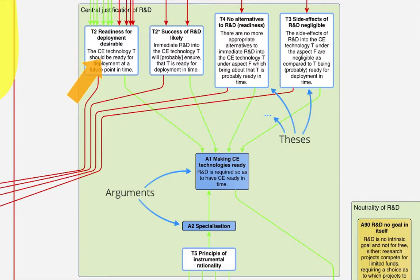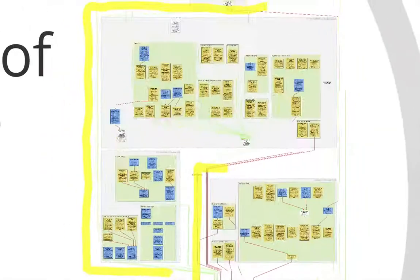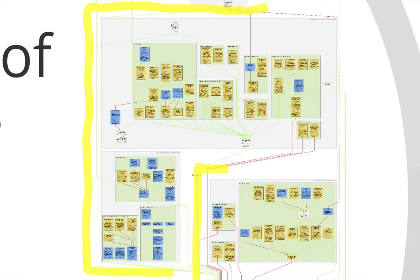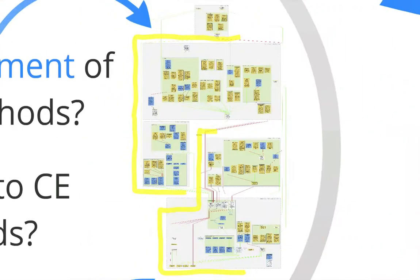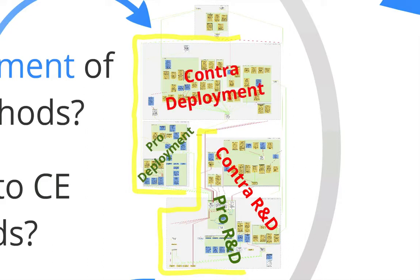Claim T2 gives rise to the most extensive sub-debate, namely the controversy about whether we should deploy climate engineering methods. That sub-controversy is visualised in the upper part of the argument map. So it's through claim T2 and through the central justification of R&D that the lower part and the upper part of the argument map are connected. Thus, roughly speaking, we have in our argument map arguments pro-R&D, which include the central justification of R&D; we have arguments contra-R&D; there are arguments pro-deployment; as well as arguments contra-deployment. And finally, at the very top of the argument map, we have arguments which concern cross-cutting issues, which are of relevance for very different reasons throughout the entire debate.